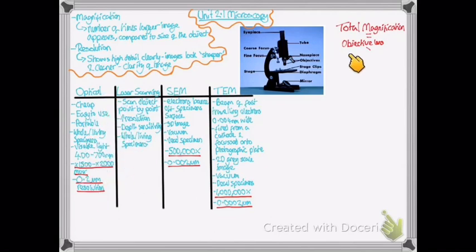To work out the magnification of an optical microscope, you do the total magnification equals the objective lens, which is your eyepiece lens and your objective lens. So your objective lens times your eyepiece lens magnification. So if your eyepiece is times four and your objective is times 10, you've got a total magnification of times 40.